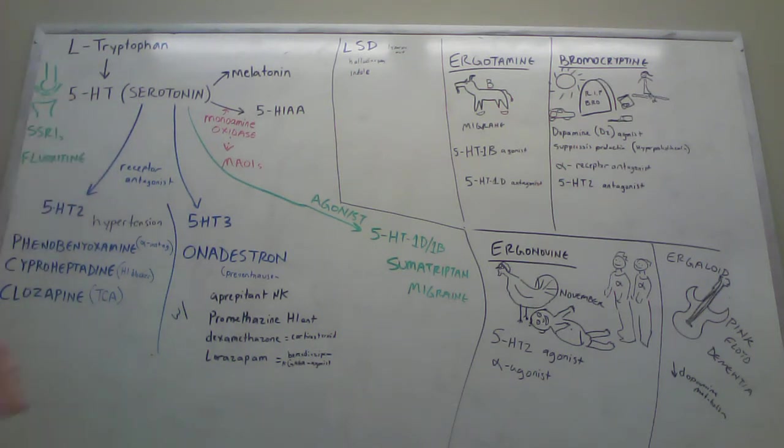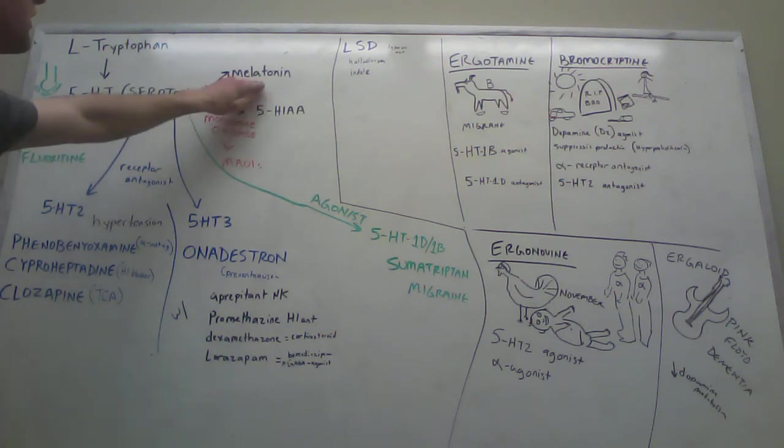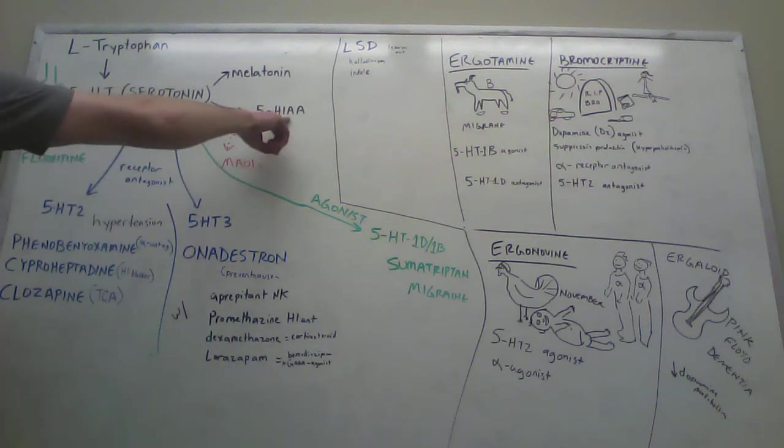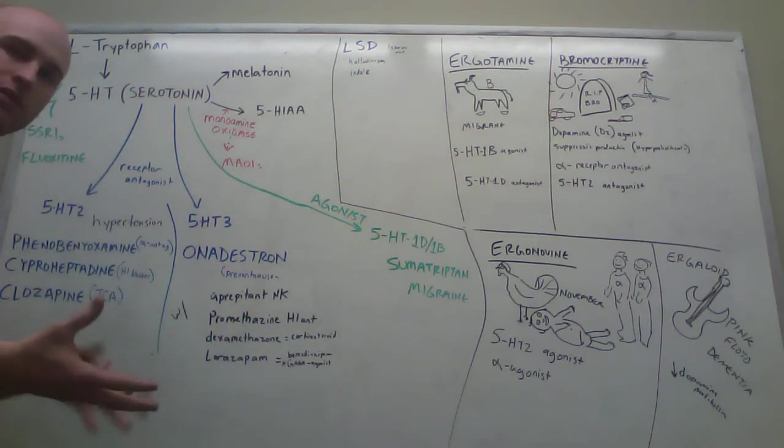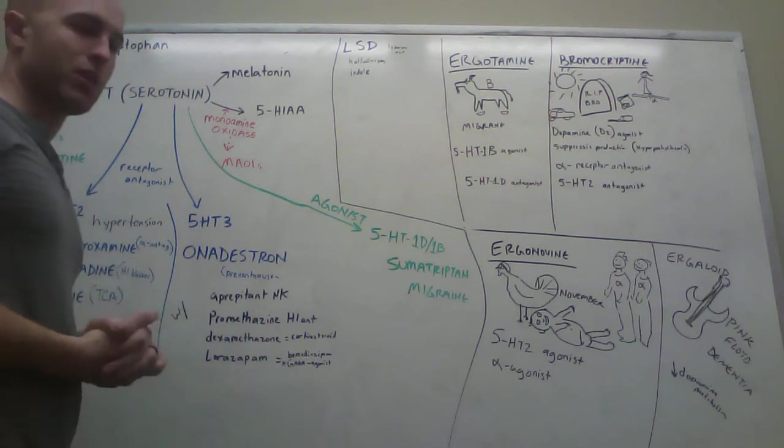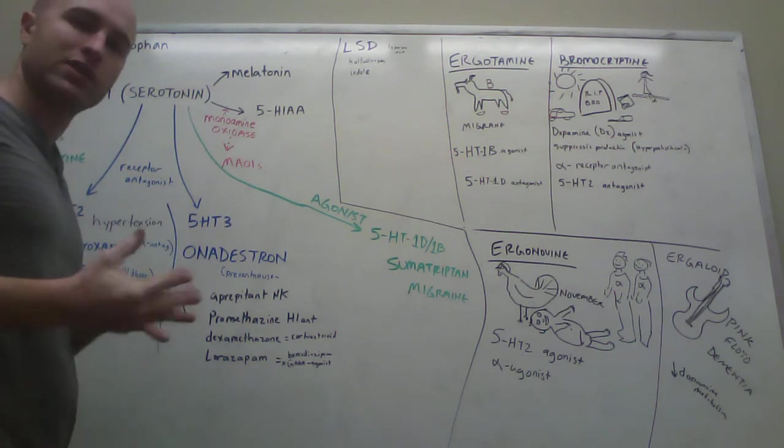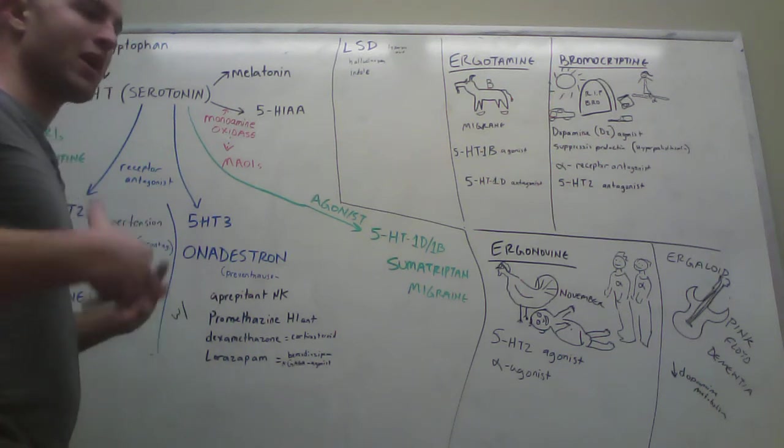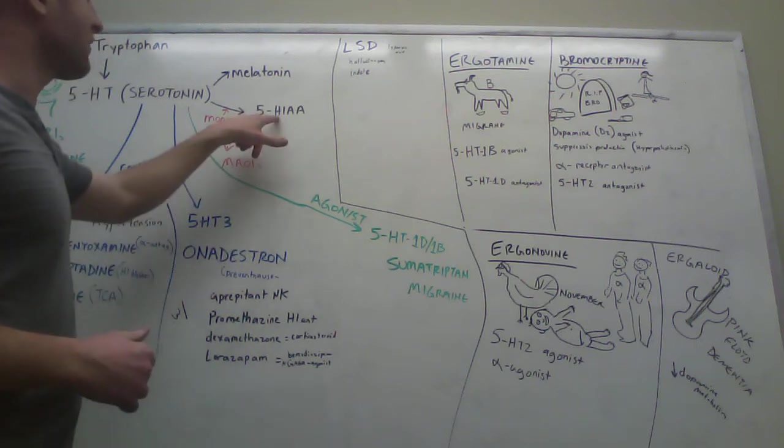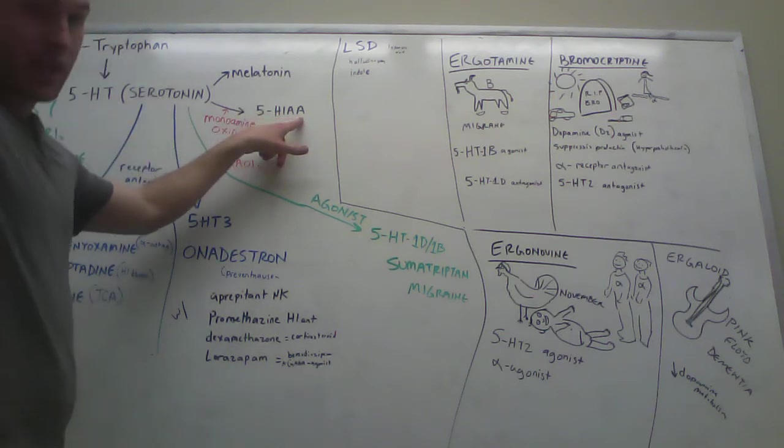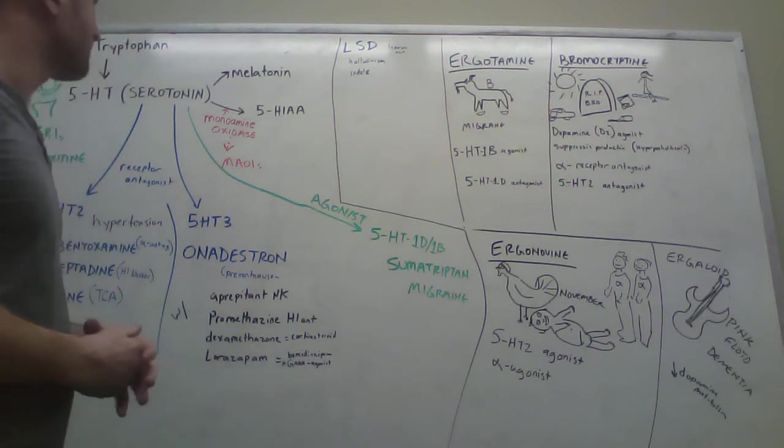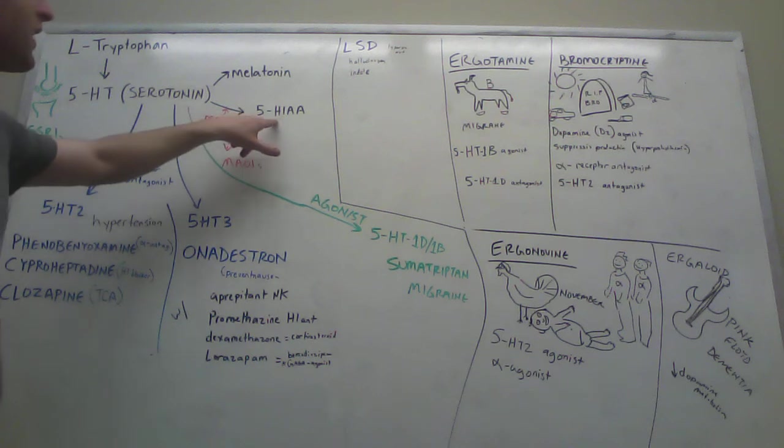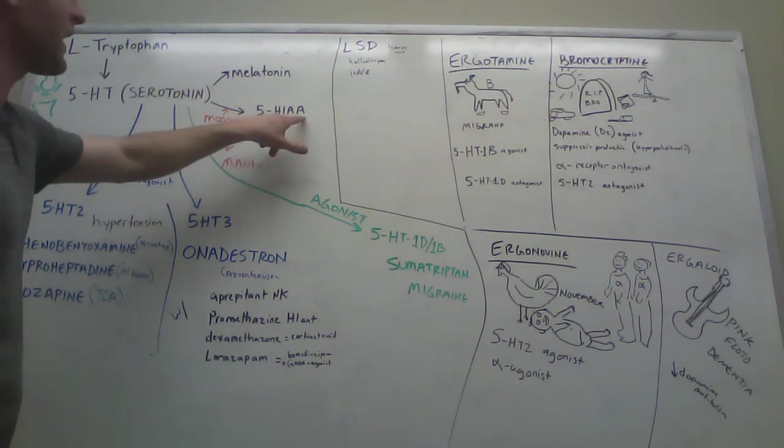5-HT can break down into melatonin or 5-HIAA. The levels of 5-HIAA can be detected in blood and sometimes that will be an indication for a tumor because some tumors break down serotonin really rapidly, so there will be a really high level of 5-HIAA in the blood. It is monoamine oxidase that breaks down 5-HIAA.